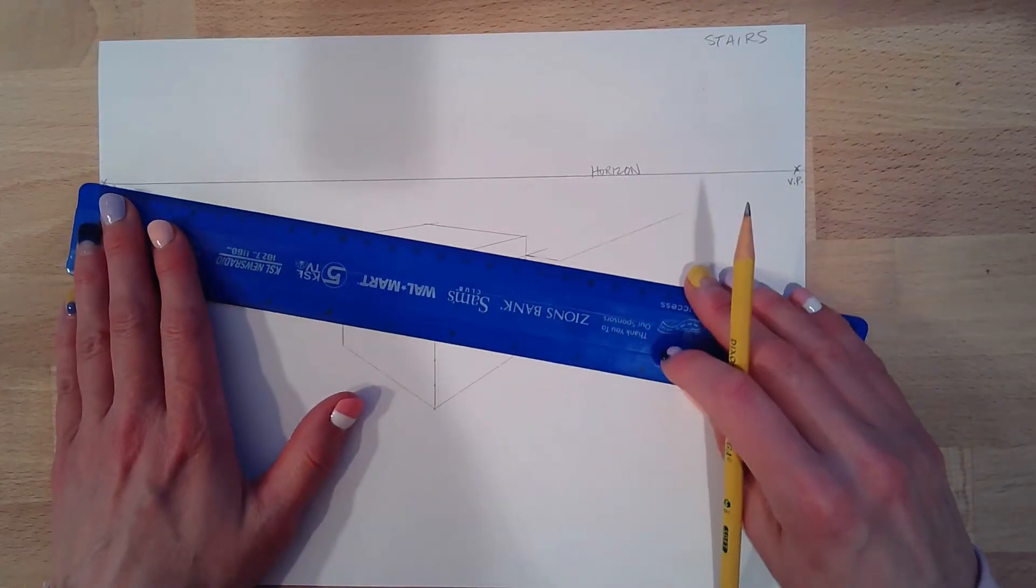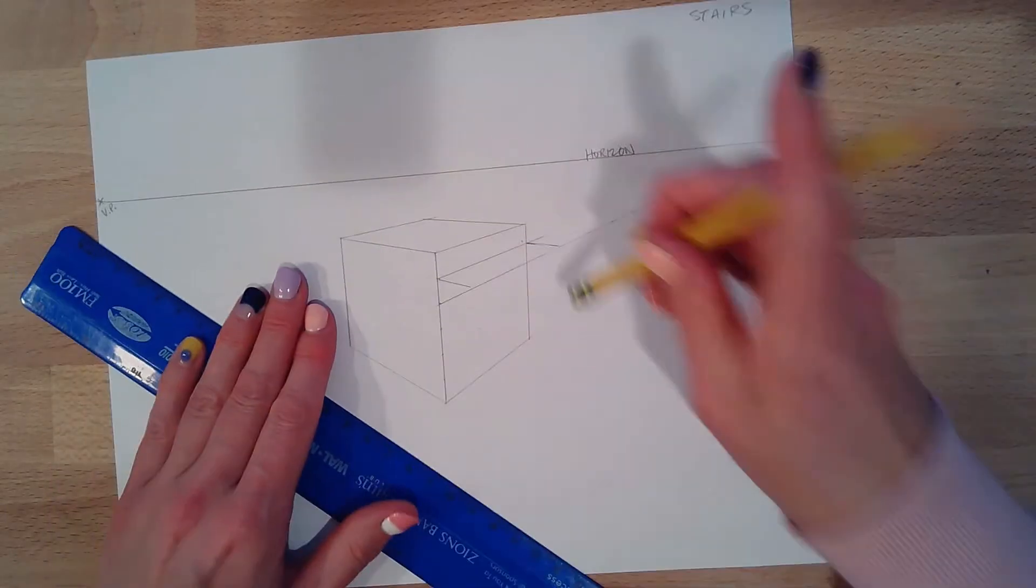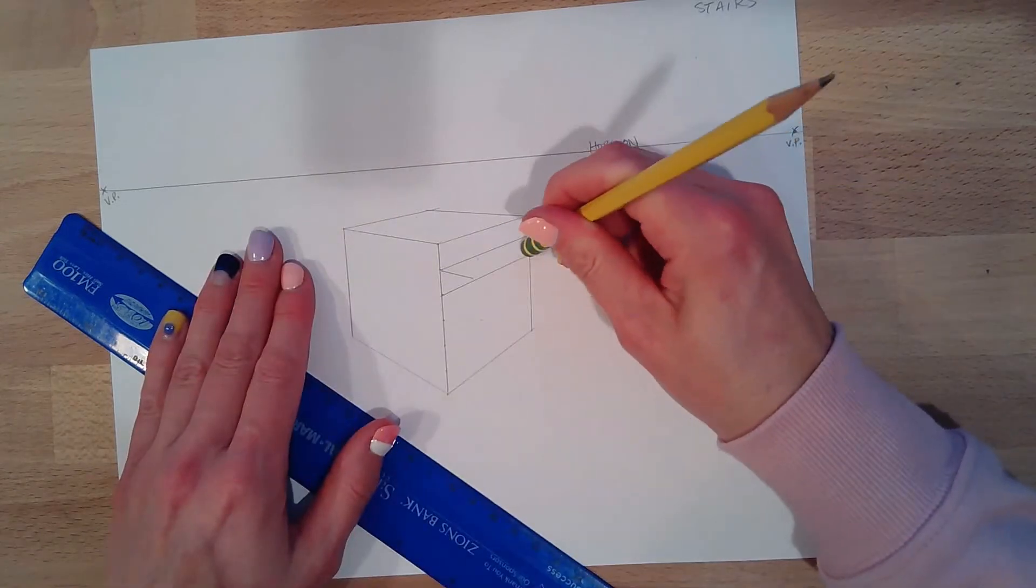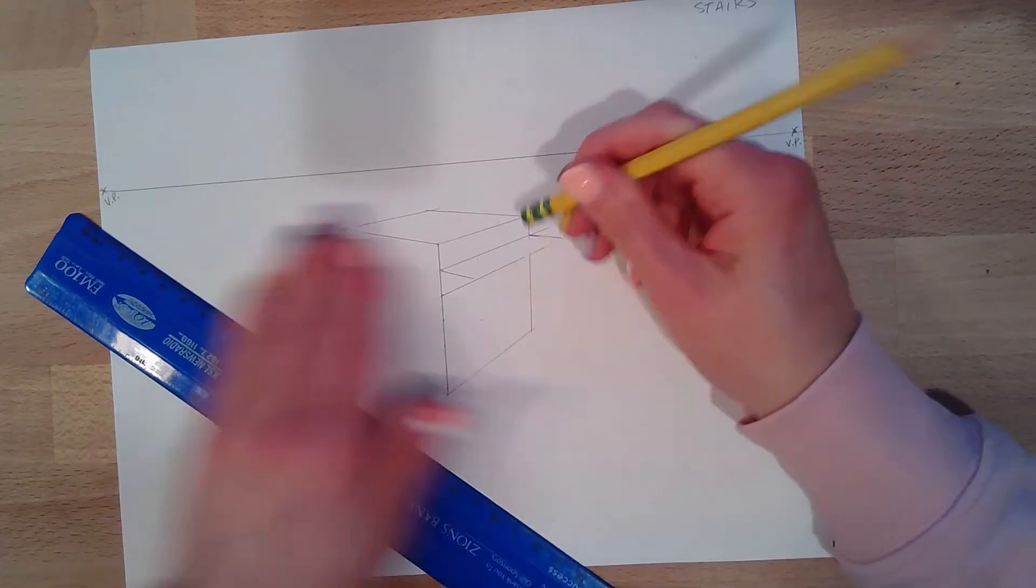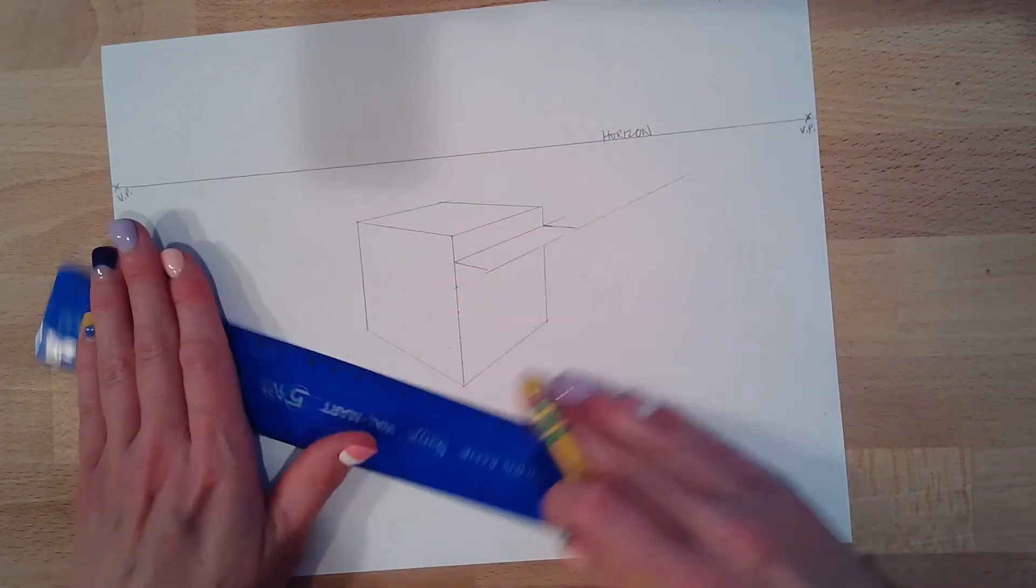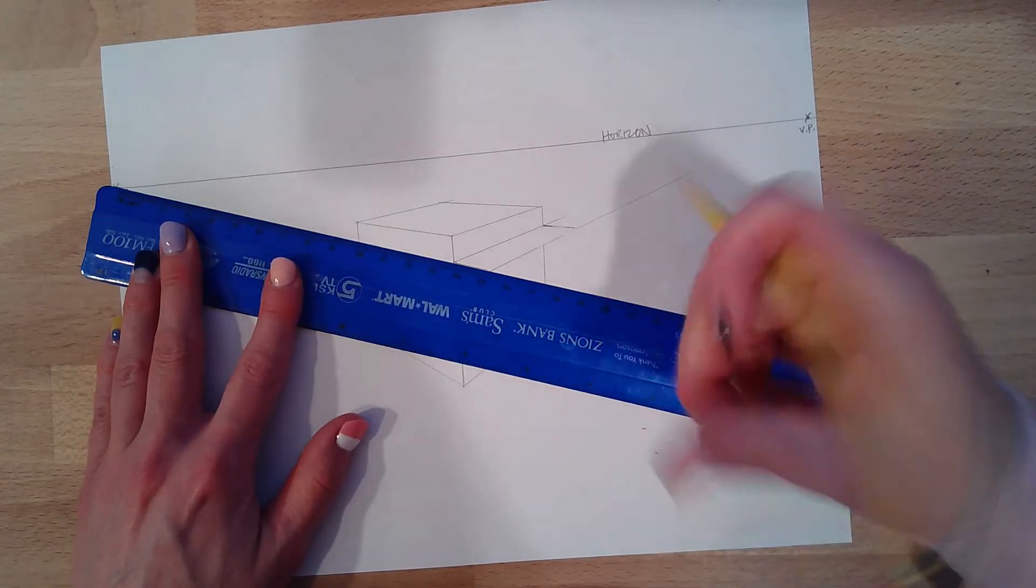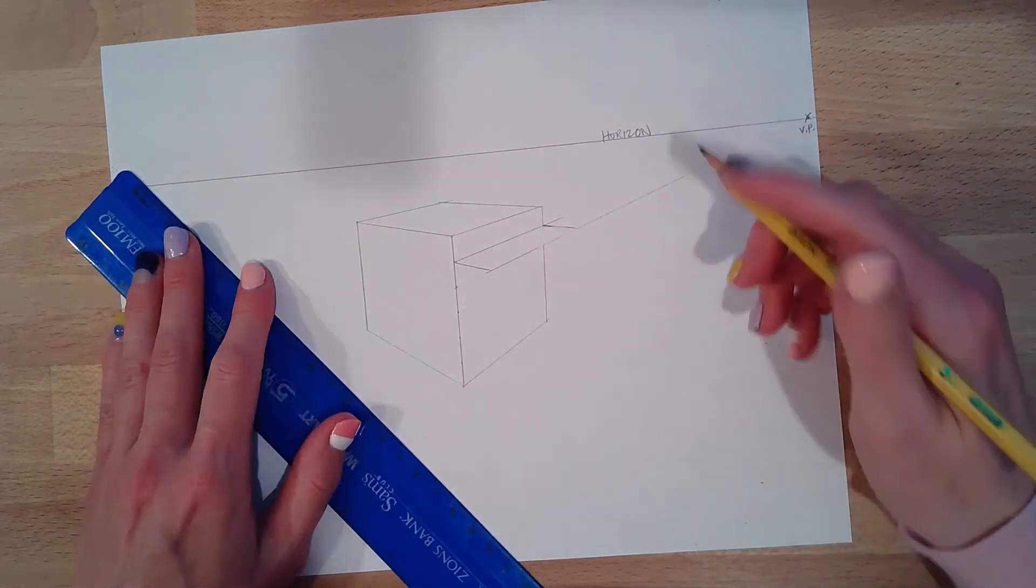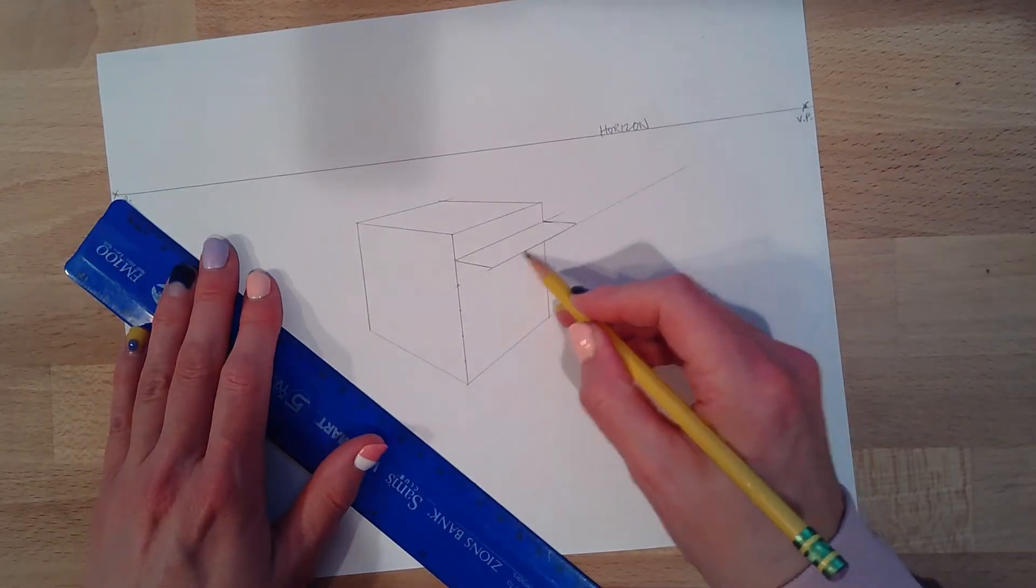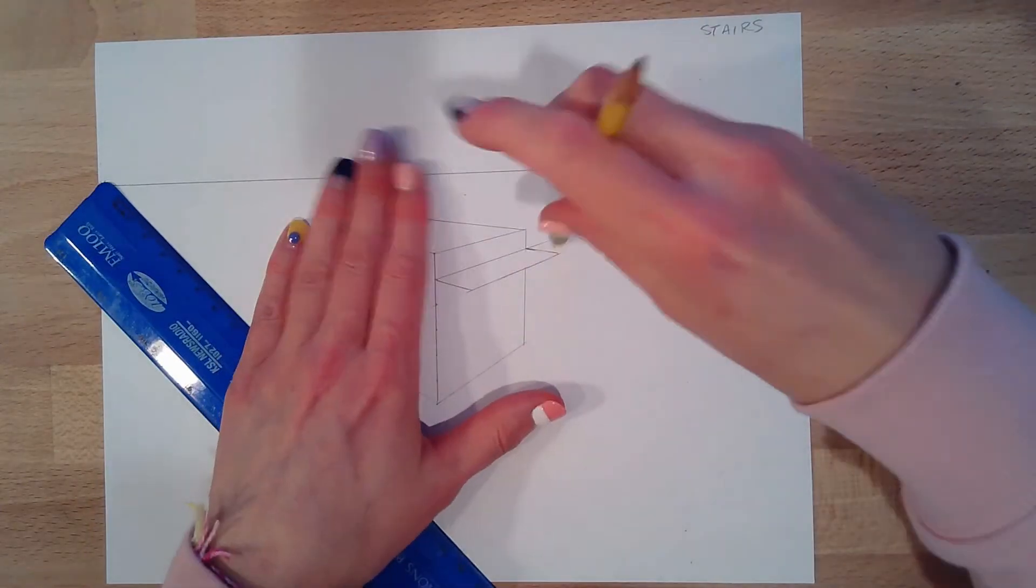And again, I'm going to draw lightly because we are going to be erasing quite a bit. Okay, so just so this makes sense, I'm going to erase these lines. This is the top of my stair. Let's make sure that meets up real nice. Okay, top of the stair. Clean up the lines. Looking good.